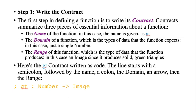So step one is write the contract. You've already learned about contracts, and this is the first step in defining any function. Remember that contracts summarize three pieces of essential information: the name, so we know what that is, it's GT that they told us. The domain - well, they told us that the GT function should take in a number. And the range - what is it supposed to produce? In this case, they said it's supposed to produce an image. So here's the GT word problem written as a contract.